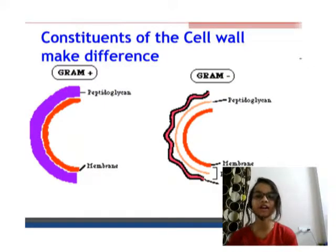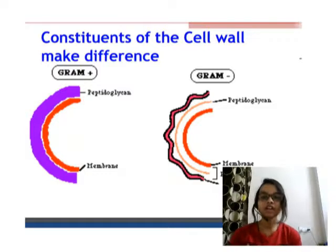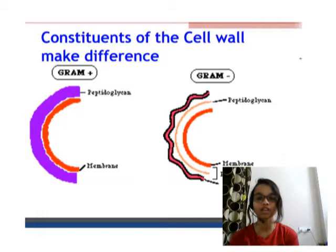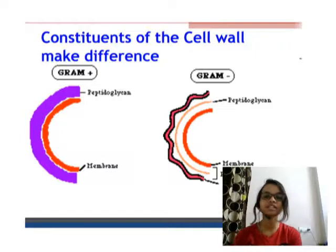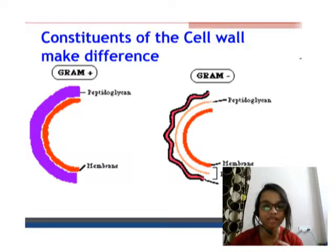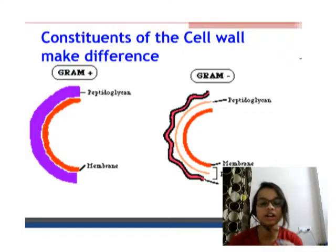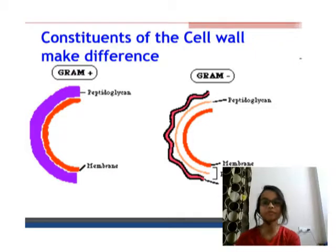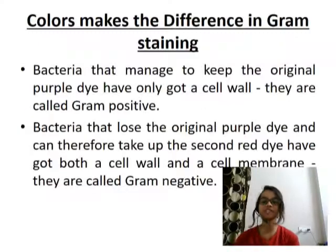Here we'll talk about the constituents of the cell wall that make the difference. On the left side you can see the Gram positive bacteria and on the right side the Gram negative bacteria. You can see the violet-colored layer of peptidoglycan in Gram positive bacteria. In Gram negative bacteria there is a reddish layer, with peptidoglycan and the periplasmic space between the membrane and the lipopolysaccharides.